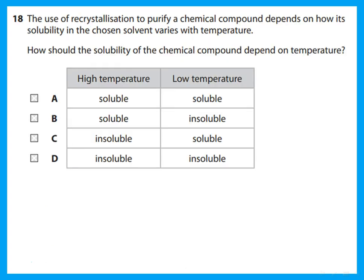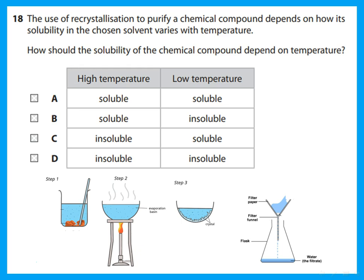Recrystallization purifies a compound based on how its solubility varies with temperature. To recrystallize, the compound must dissolve at high temperature. When allowed to cool, it becomes less soluble and forms crystals that can be filtered out. So crystallization relies on the compound being soluble at high temperature and insoluble at low temperature.